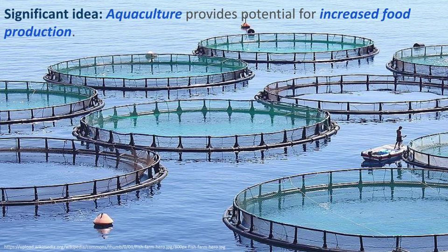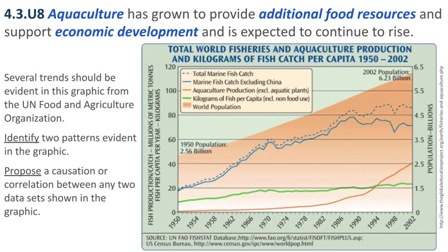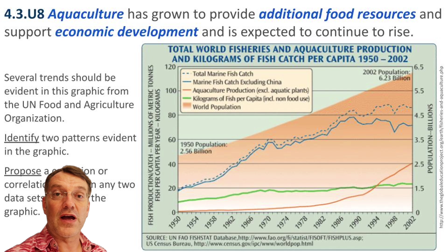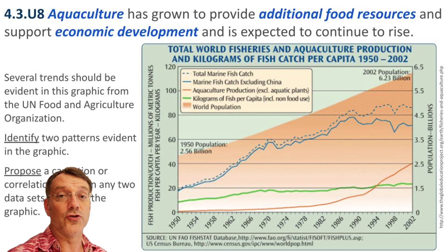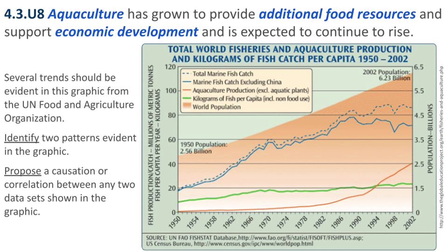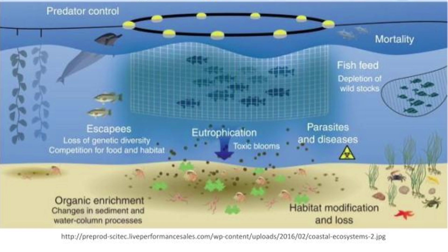So far we've discussed wild fisheries. An alternative is aquaculture — basically the farming of creatures in aquatic ecosystems. Since 1950, the annual fish catch per person per year has essentially quadrupled from 20 to 80 kilos. The aquaculture line on the graph is growing exponentially. As wild fisheries have begun to collapse and been harvested beyond their maximum sustainable yield, people are turning to aquaculture to meet increasing demand. The supply from wild fisheries is decreasing while demand is increasing, and aquaculture is the means of bridging that gap.